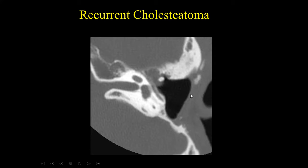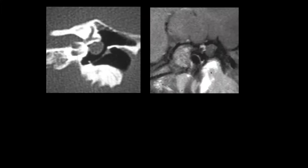Here's an example of a patient that's undergone a canal wall down mastoidectomy. We can see the head of the malleus and a soft tissue mass located anteriorly. Based on this alone it's hard to definitively say recurrent cholesteatoma, but given the extensive disease and the mass distal to the manubrium of the malleus — a hard place to get to surgically — I'm more inclined to think this was recurrent cholesteatoma, and indeed it was.